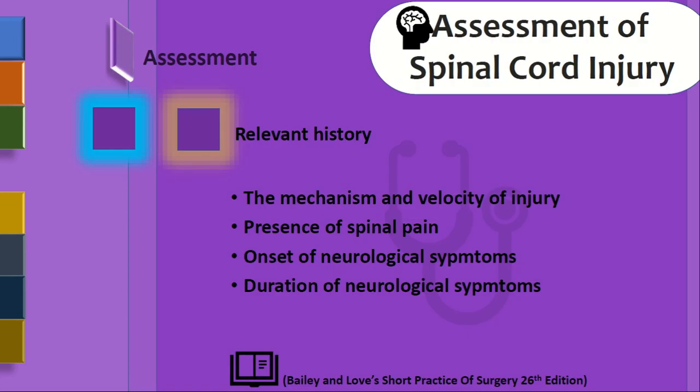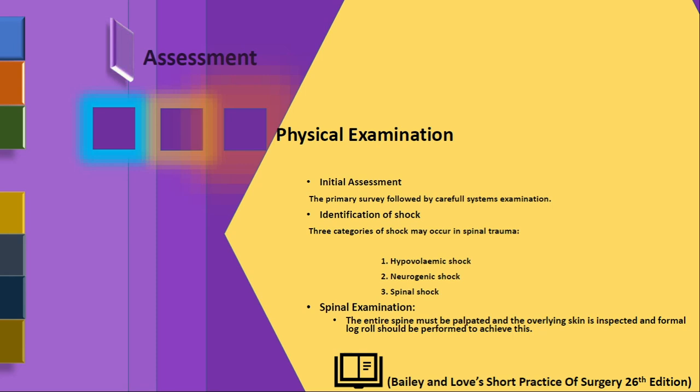Relevant history must include the mechanism and velocity of injury — how forcefully the patient fell or the nature of the accident — any pre-existing spinal pain, the site of injury, and whether neurological symptoms such as weakness, loss of reflexes, or loss of sensation have already developed. If symptoms have started, the duration of those neurological symptoms is very important relevant history.